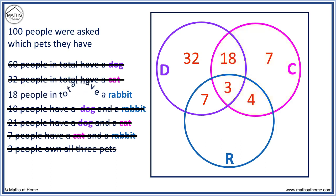Now 18 people have a rabbit. 7 plus 3 equals 10, plus 4 equals 14. We need 4 more to make 18. Finally, we know that the numbers must add to 100.